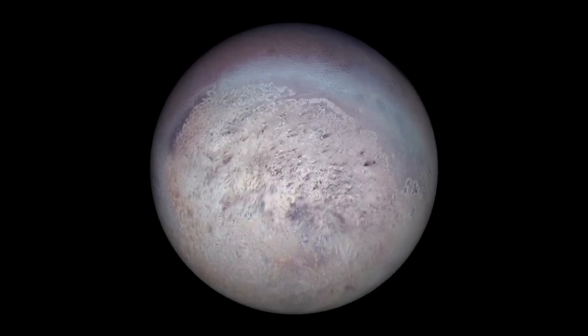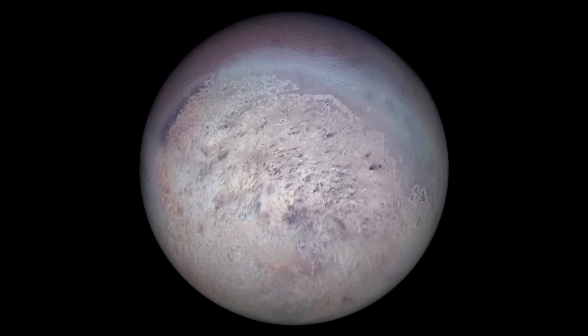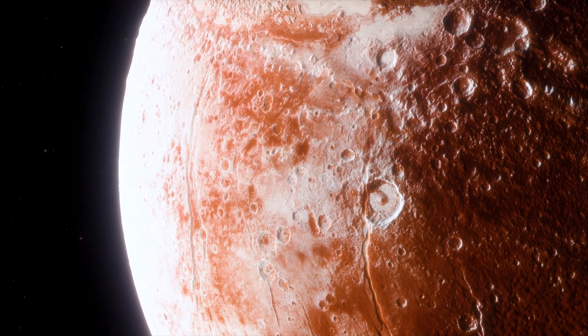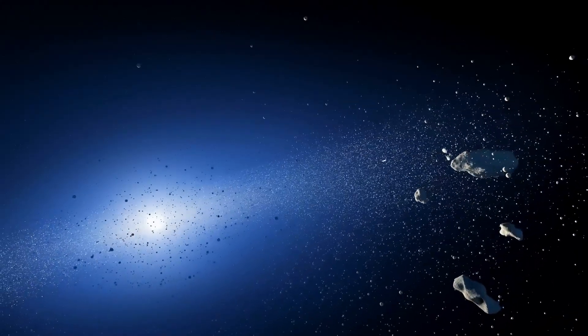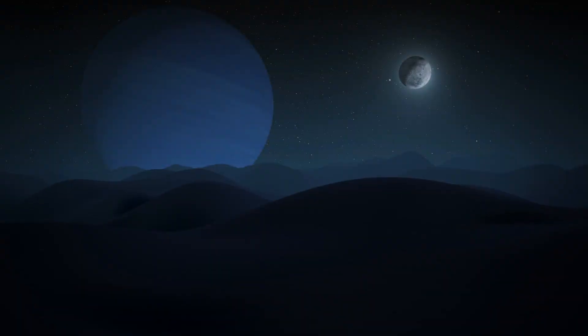Triton's retrograde orbit suggests it may have originated as an independent object captured by Neptune's gravity. Scientists believe that Triton was once a dwarf planet like Pluto or a large Kuiper Belt object captured by Neptune's gravity and became its largest moon.